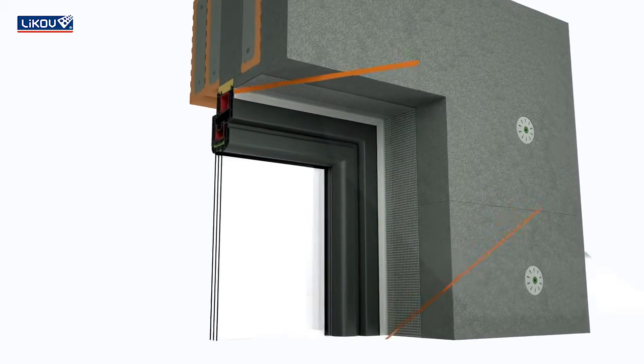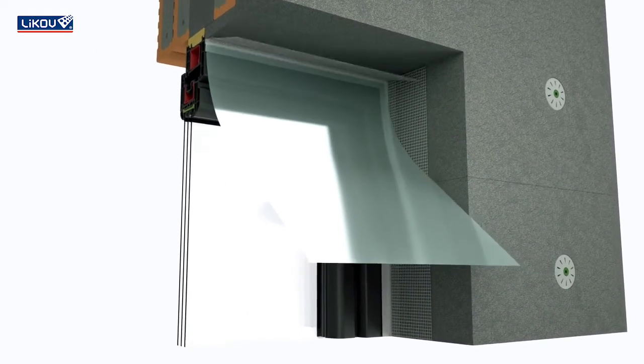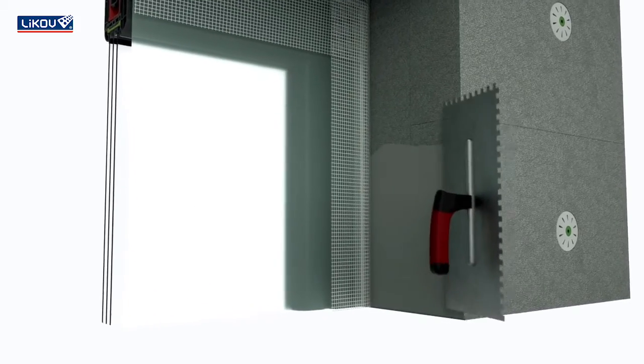After removing the protective tape, stick foil onto the removable strip to protect the window from staining during the plastering work.